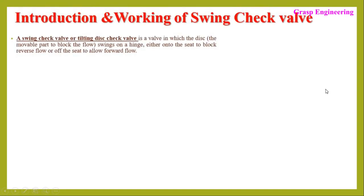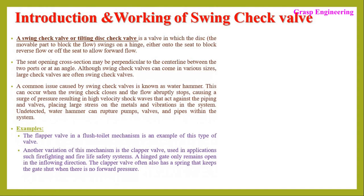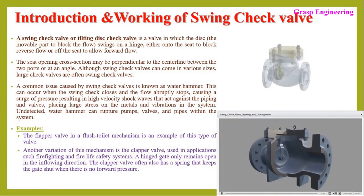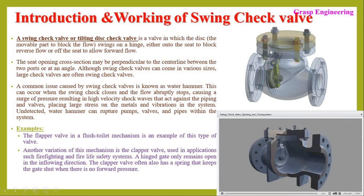This slide represents a small introduction and working of the swing check valve. As the name suggests, this check valve consists of a swing disc connected with a hinge. Along this hinge the disc will move for the respective flow. When the fluid comes inside the valve it moves up, and when there is a reduction in fluid flow it goes back down and closes the fluid flow due to gravity.